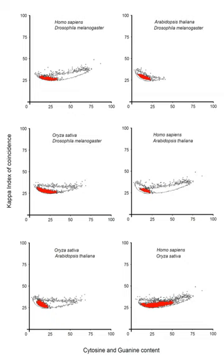In genetics, a promoter is a region of DNA that initiates transcription of a particular gene. Promoters are located near the transcription start sites of genes, on the same strand and upstream on the DNA, towards the 3' region of the anti-sense strand. Promoters can be about 100–1000 base pairs long.